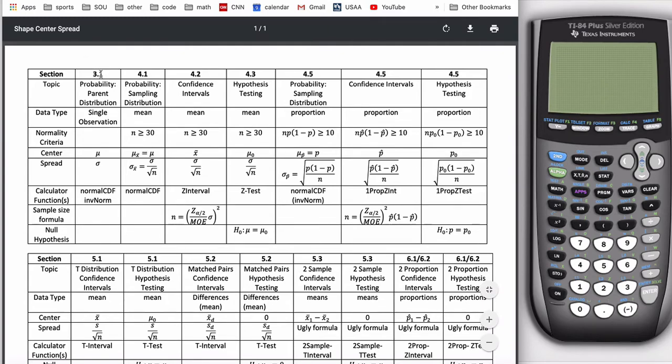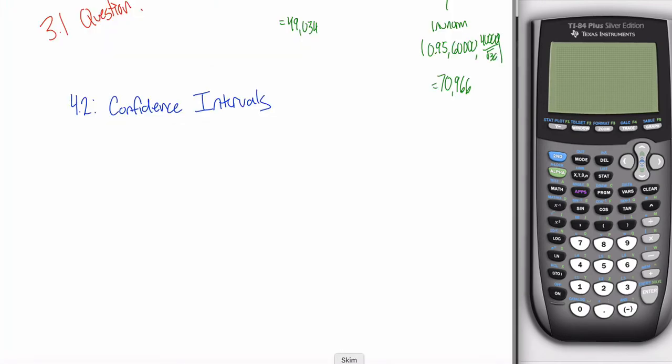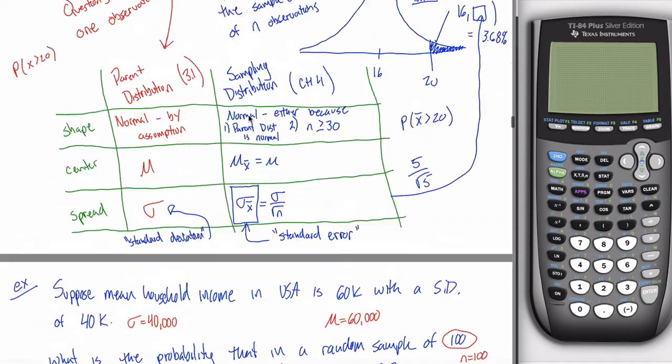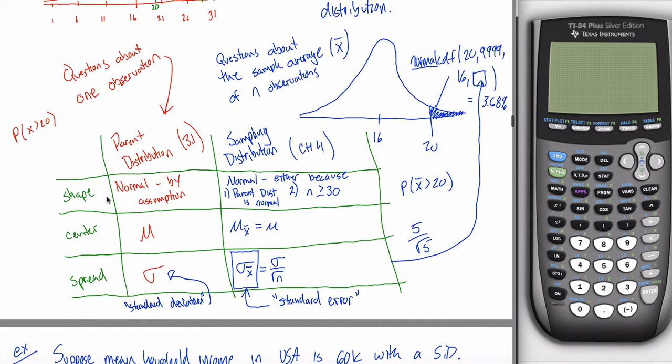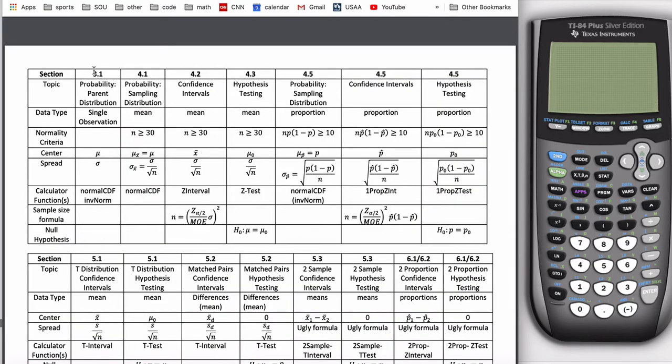So again, here is a neater version of what I showed you. See if I can find it here, right? Chapter three, shape, center, spread with some notation in here. I think that that's pretty similar to what you see here. Chapter three, the topic, it's about probability, right? Probability for a single observation.